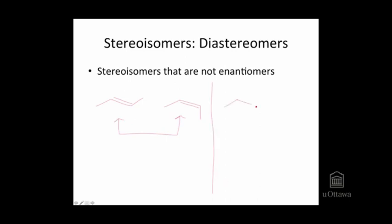Other examples would be a case where we have the hydroxyl and the bromine cis, or on the same side of the molecule to each other. Two molecules that have their atoms connected exactly the same way, but differently arranged in space — here the difference is the orientation and configuration of that hydroxyl group. Because these are not mirror images, and you can always double check that by using a model, we term these two diastereomers of each other.